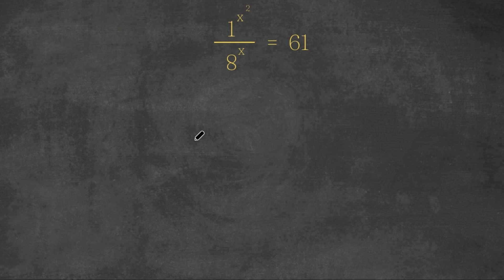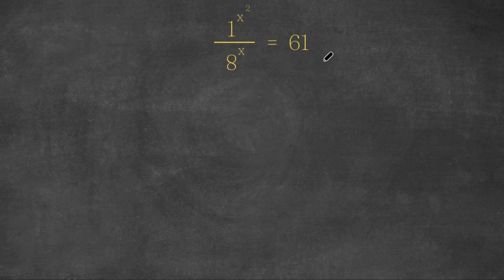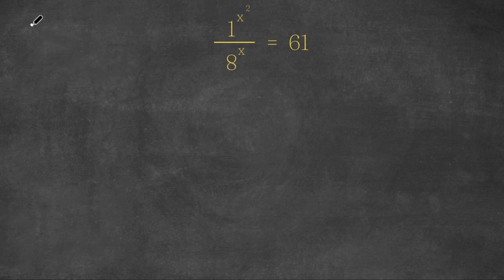Hey guys, welcome back to Qlik Academics. In today's video I'm going to be teaching you guys how to solve this exponential equation. So we have 1 to the power of x squared divided by 8 to the power of x is equal to 61. Now what I'm first going to do is deal with 1 to the power of x squared. Well, if you guys remember, 1 to the power of any number is equal to 1, meaning that 1 to the power of x squared is simply equal to 1. So this would be 1 over 8 to the power of x is equal to 61.